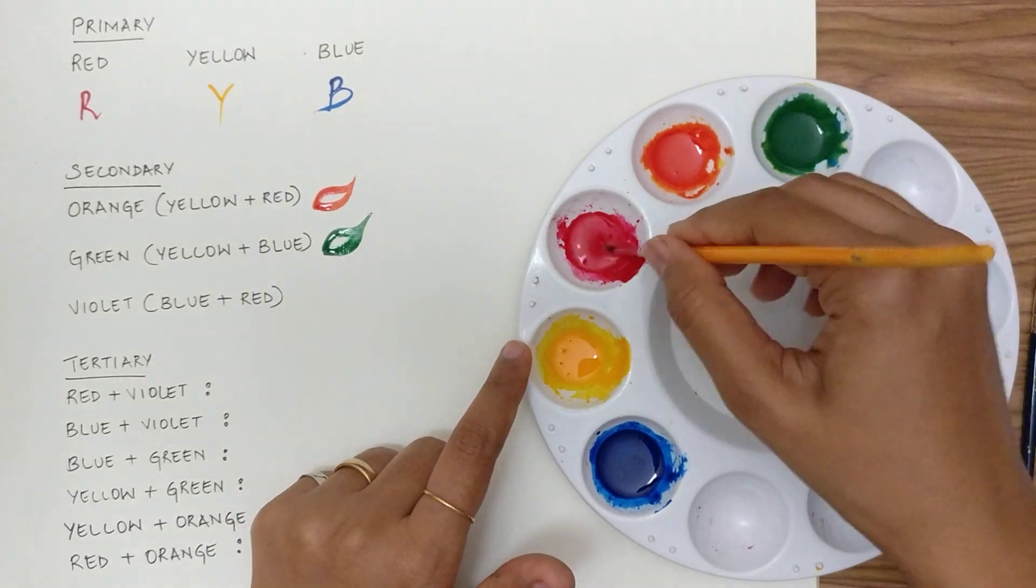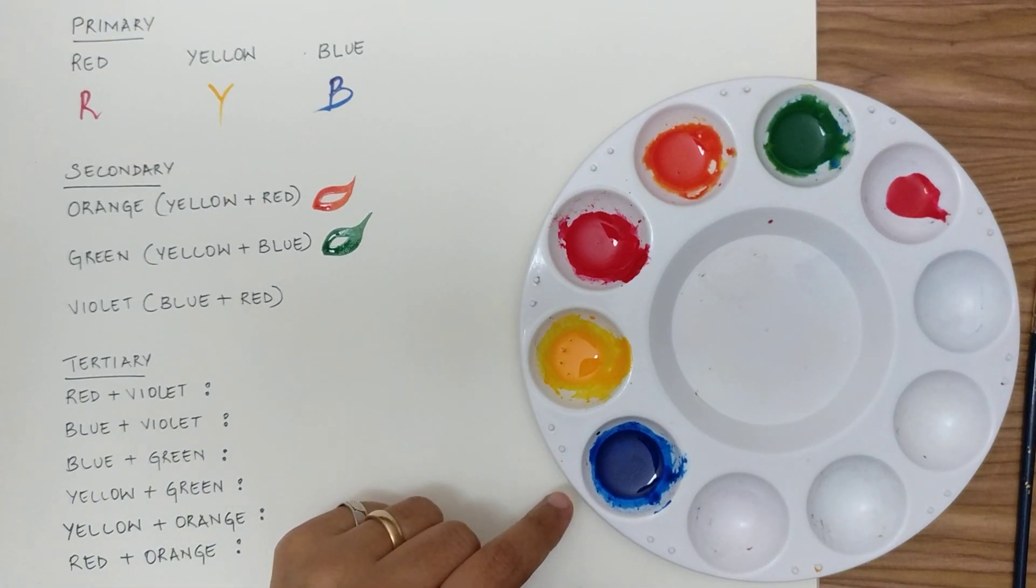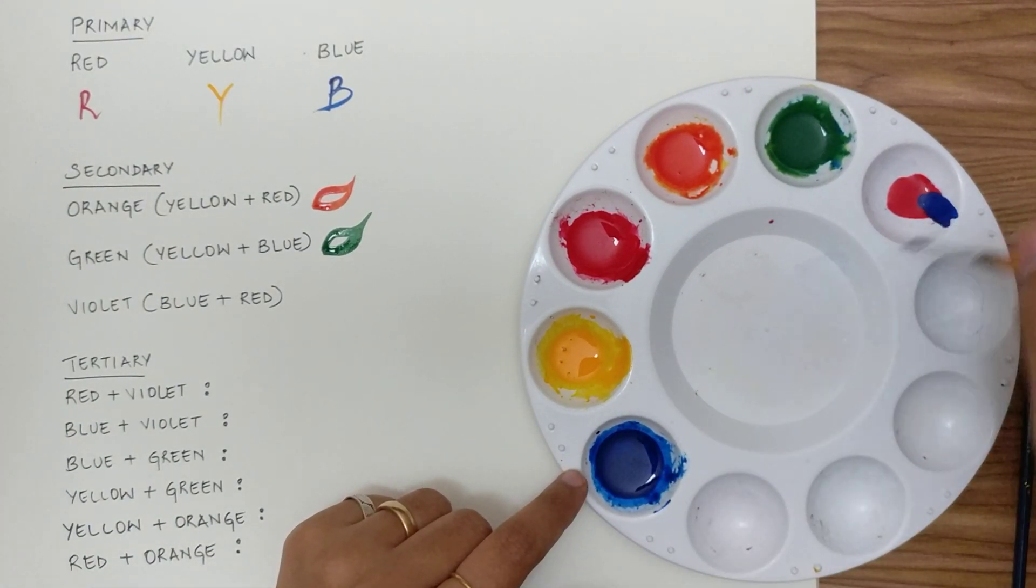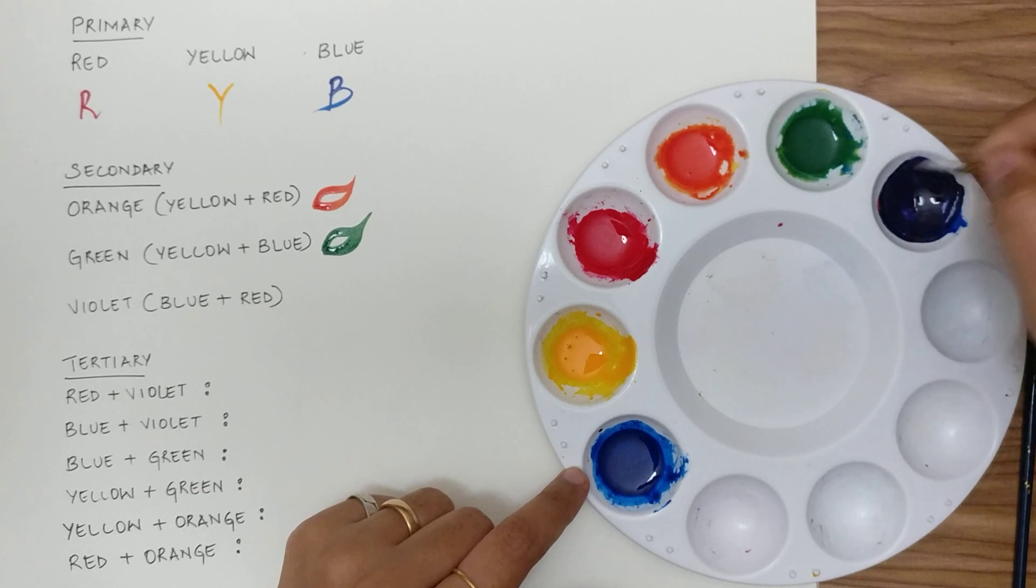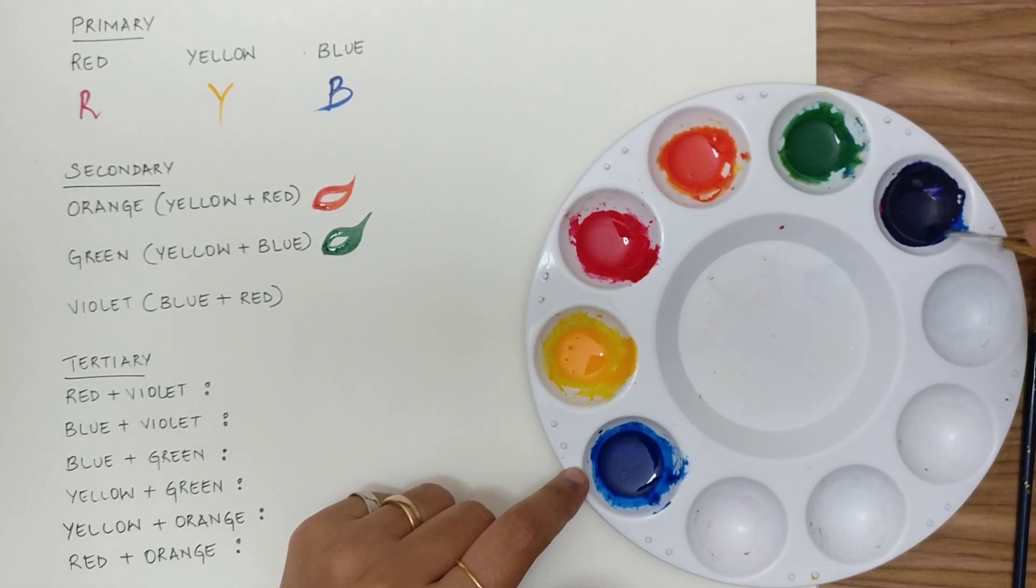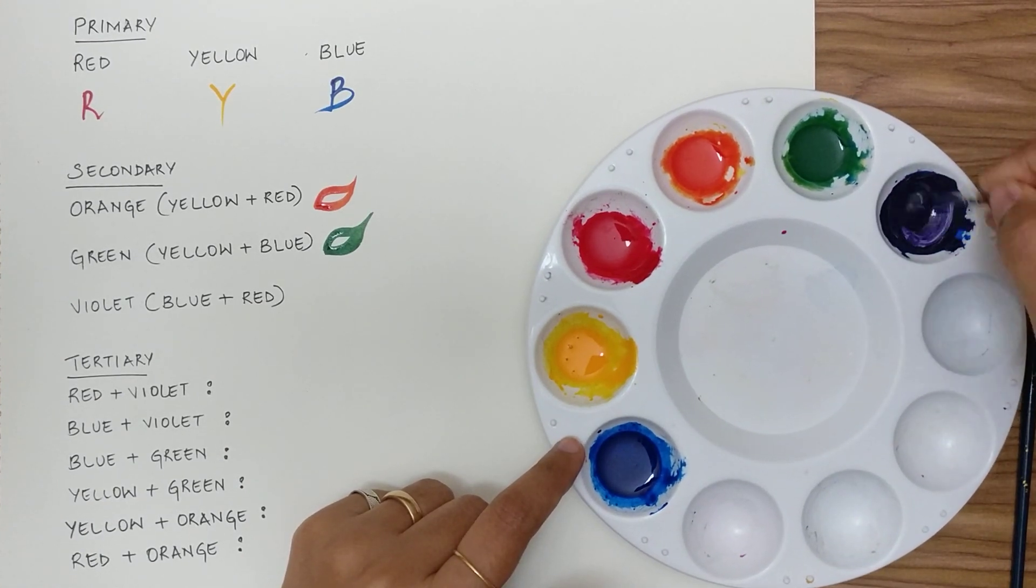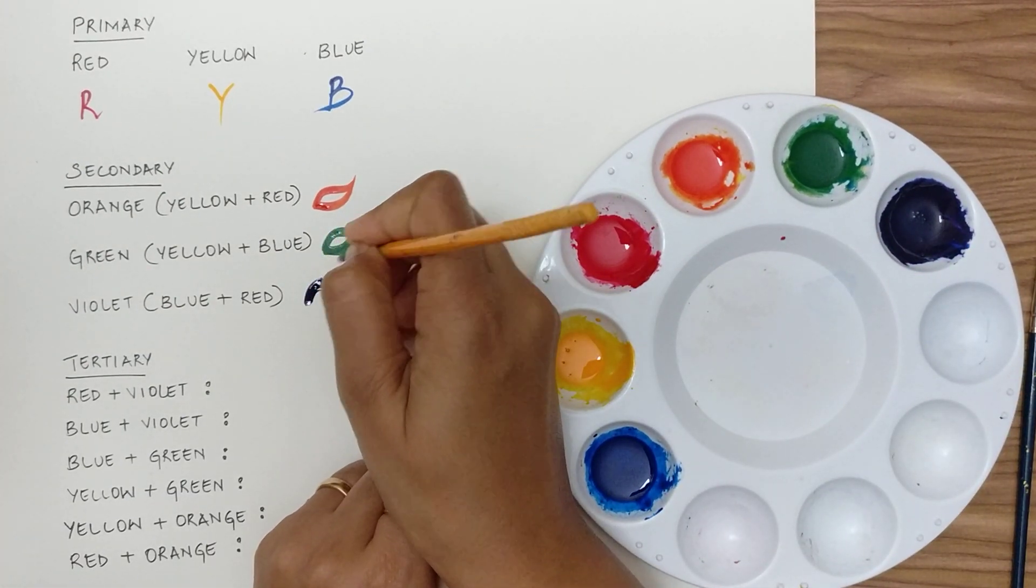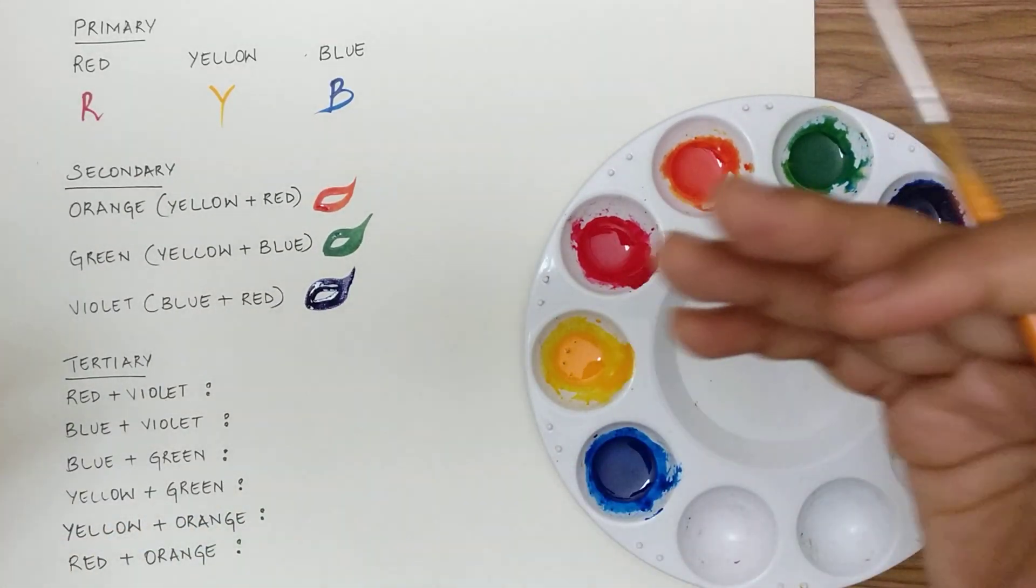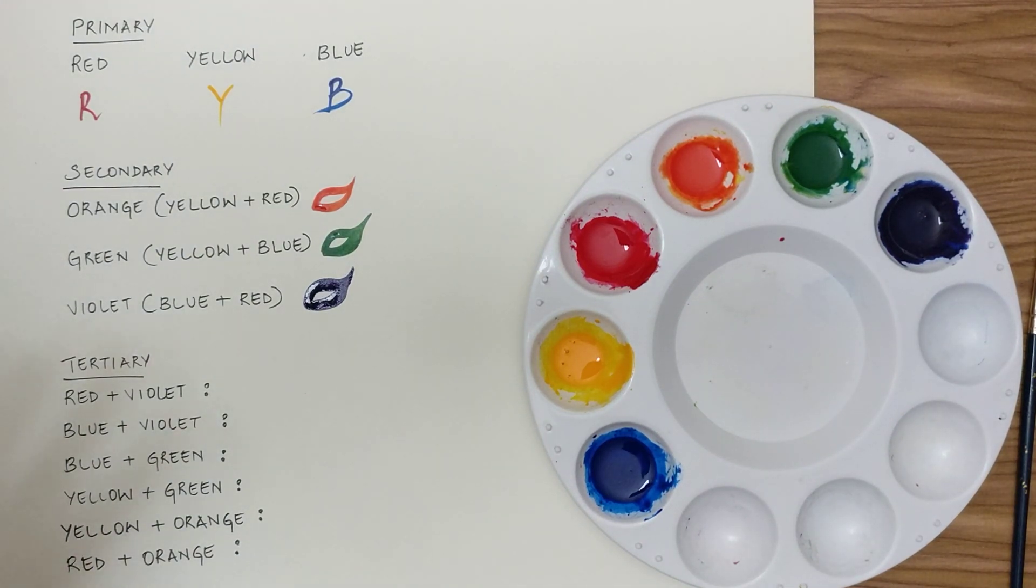When I combine red and blue, it gives me a deep violet color. I'll just add a hint of red more to it. It gives me a dark violet color.